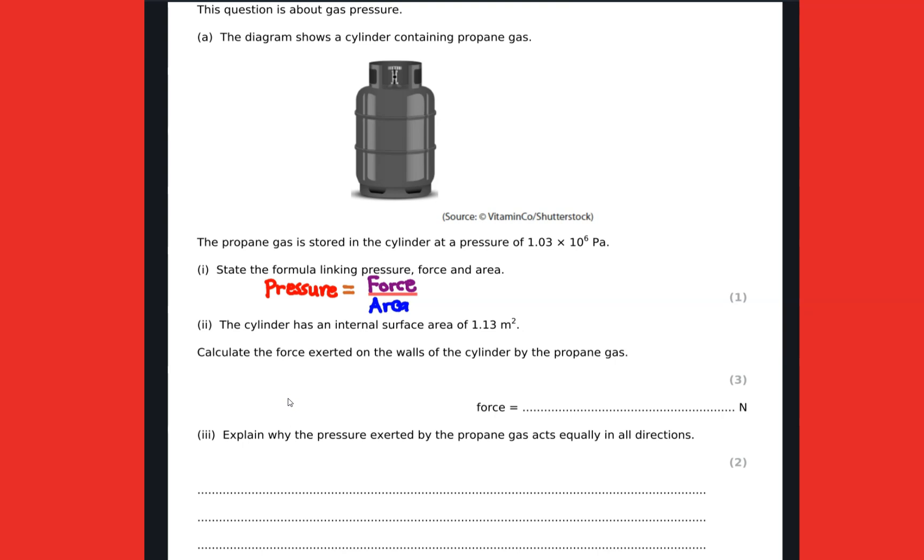So in this case we are supposed to indicate that pressure equals force over area, as written there. And roman two, the cylinder has an internal surface area of 1.13. We're supposed to calculate the force exerted on the walls of this cylinder by propane gas.